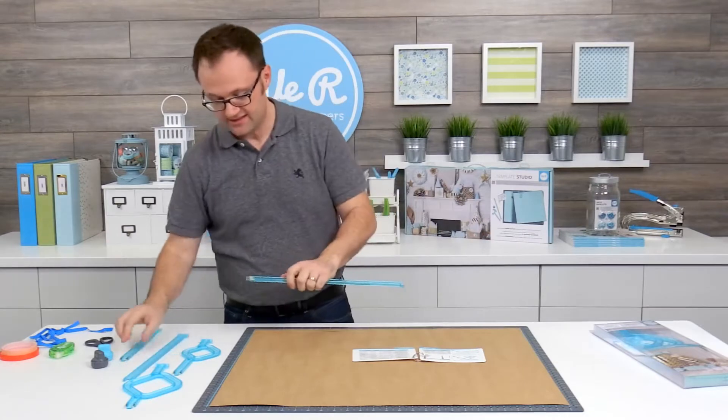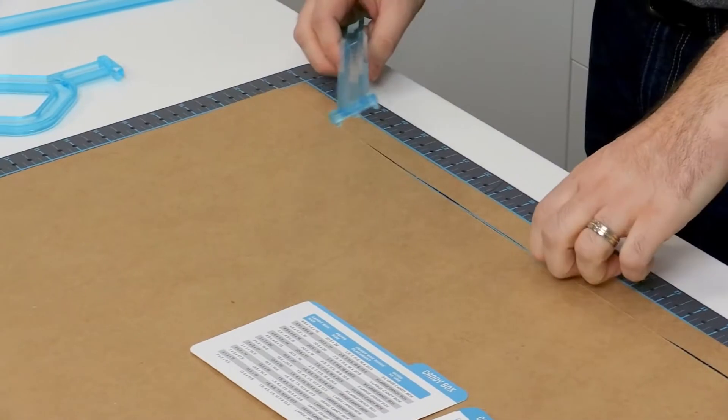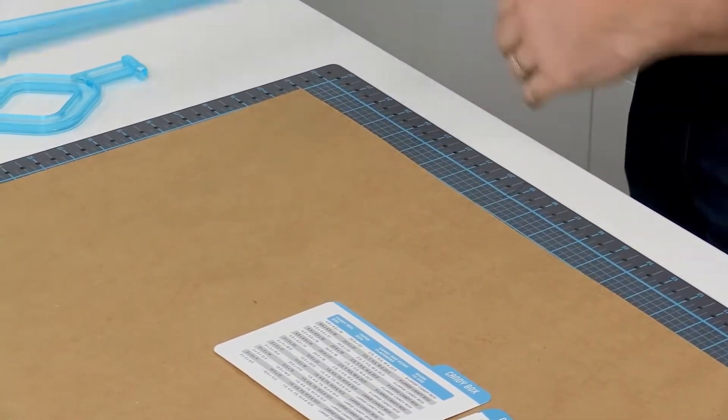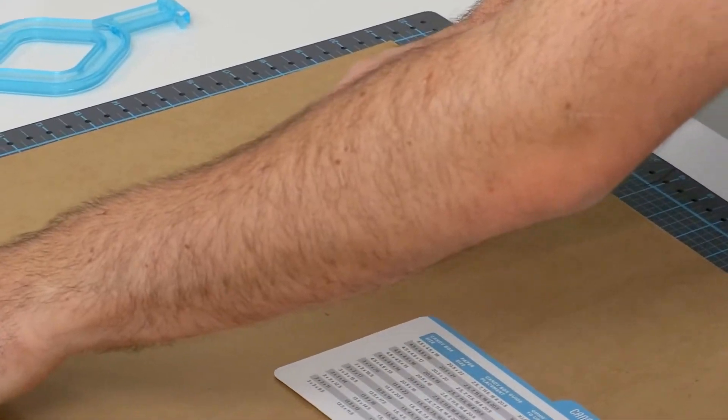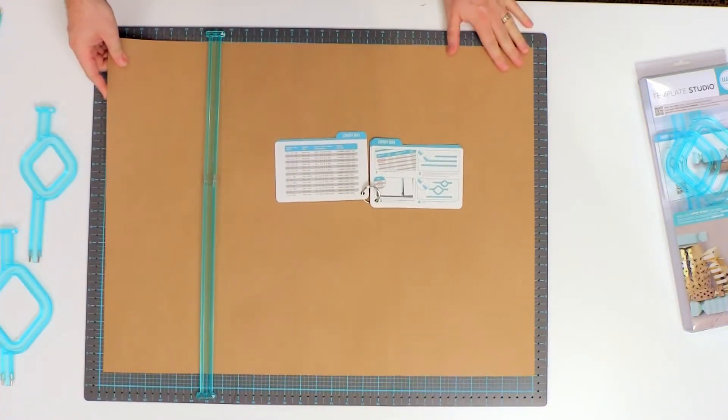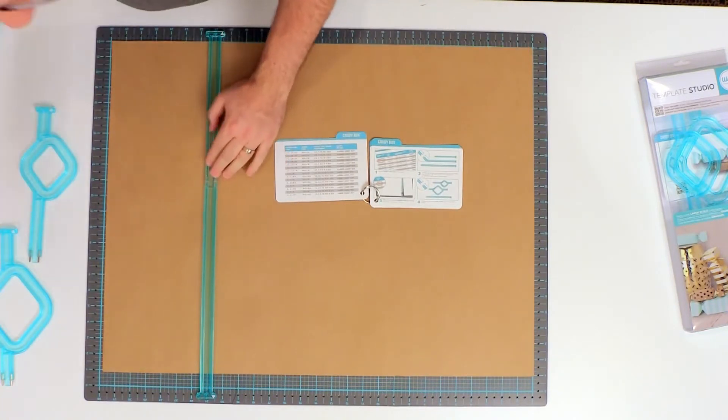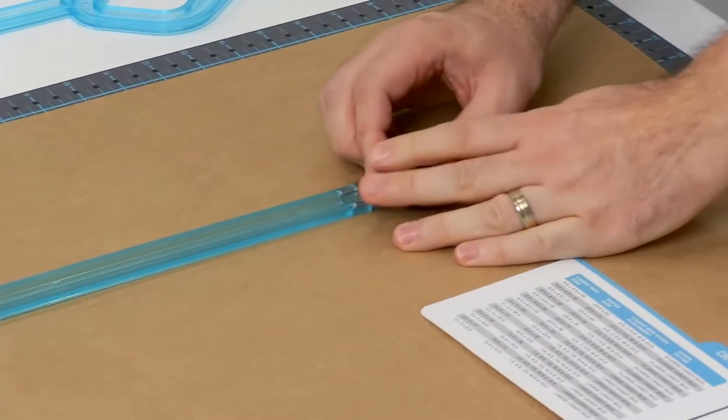Then I disconnect these. I connect A and B together to do the vertical cut. And I align that, as it says here, to 20 and a half. And I cut vertically.